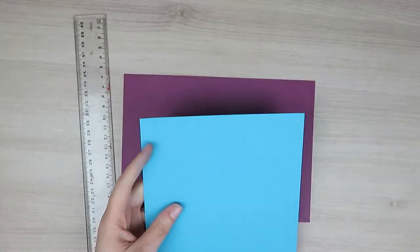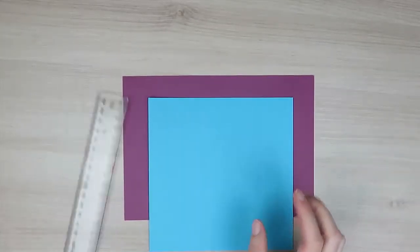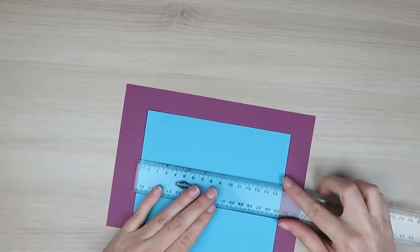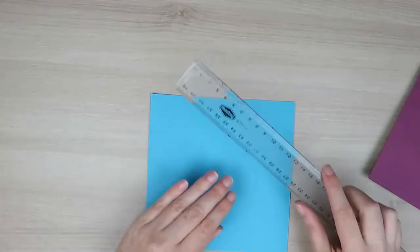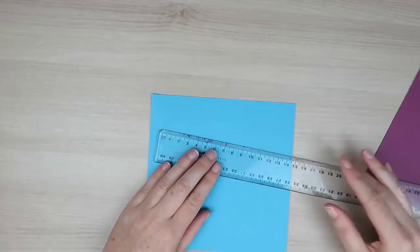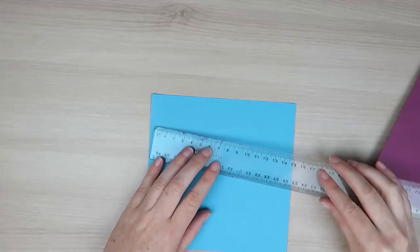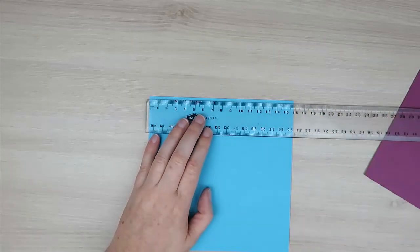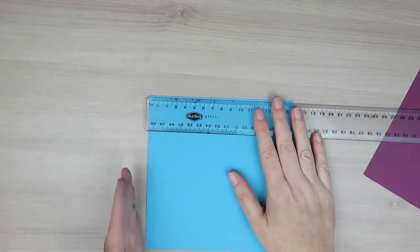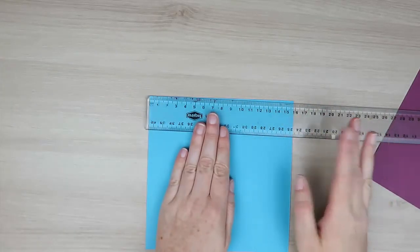So for this score line, I want to make a card that looks similar to this. So what I'm going to do is create a score line right down the center of my cardstock. So this cardstock here measures 16 centimeters long. So I want to make my score line at the 8 centimeter mark. So to do that I'm going to come in with my ruler.